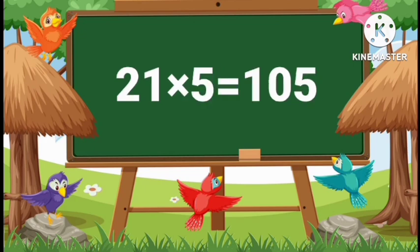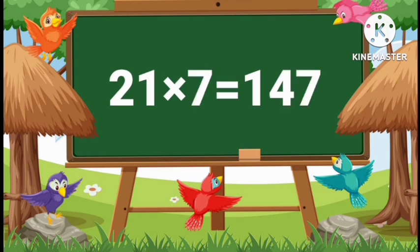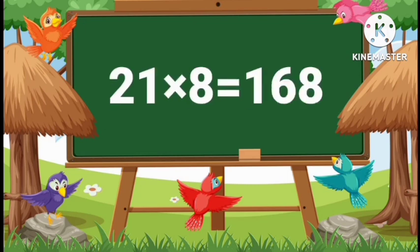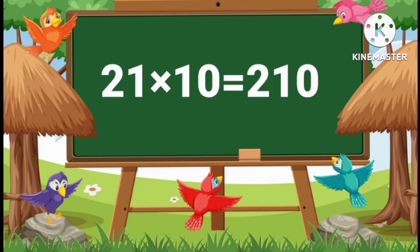21 fives are 105. 21 sixes are 126. 21 sevens are 147. 21 eights are 168. 21 nines are 189. 21 tens are 210.